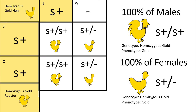Similar to the first, the second pairing is a gold male bred to a gold female, and just like silver, 100% of the offspring will be gold, with the males being homozygous and the females being hemizygous. Again, the key takeaway here is that you can never get a silver by breeding two golds together.